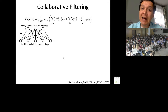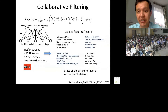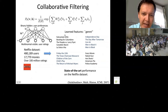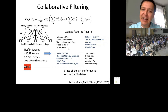RBMs can also be used for collaborative filtering — they were one of the state-of-the-art models. The observed data is multinomial representing user ratings, and binary hidden features represent user preferences. Applied to the Netflix dataset, individual hidden units pick up genres: one unit for horror movies, one for scary/funny movies, one for action movies. There's even a unit that appears dedicated to Michael Moore's movies — the model discovers that users either like his movies or they don't.